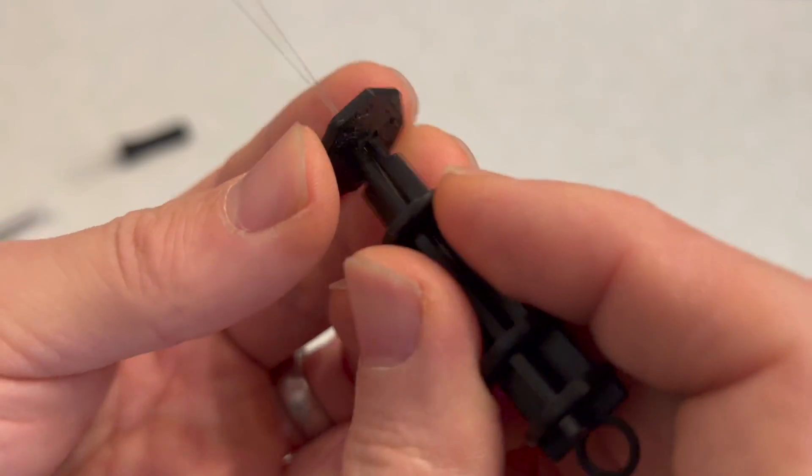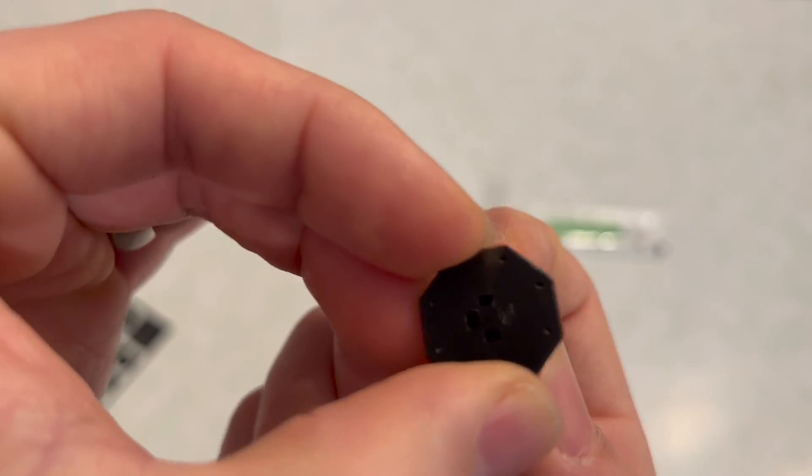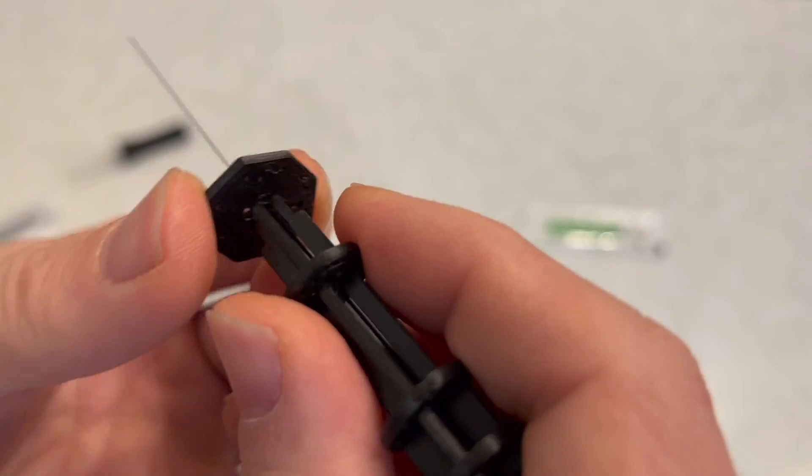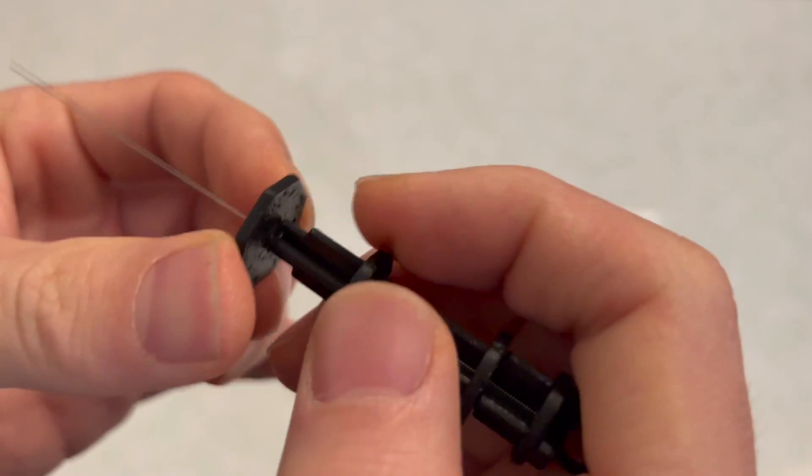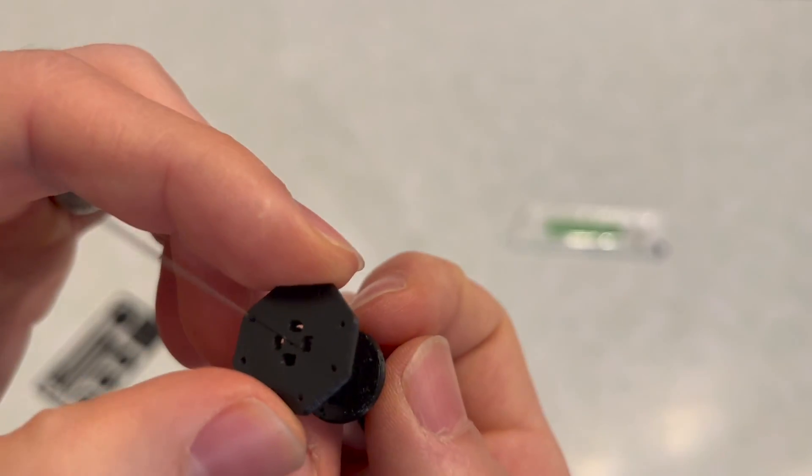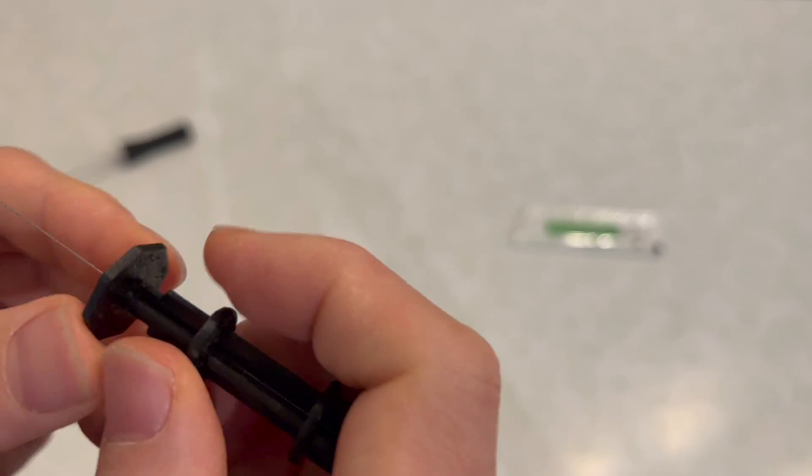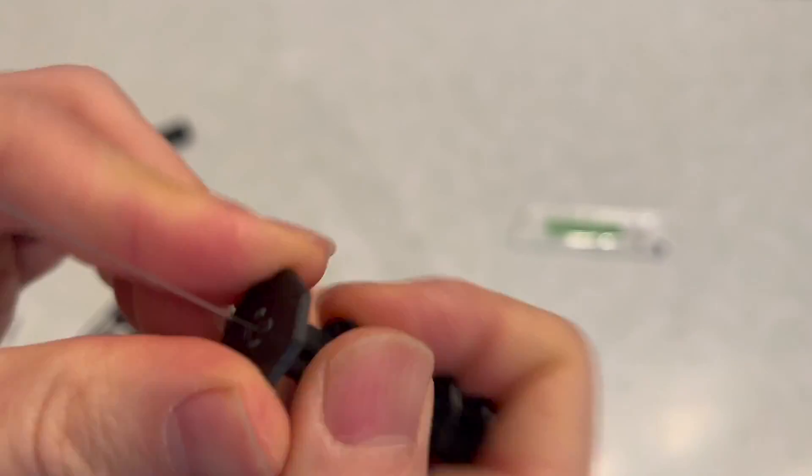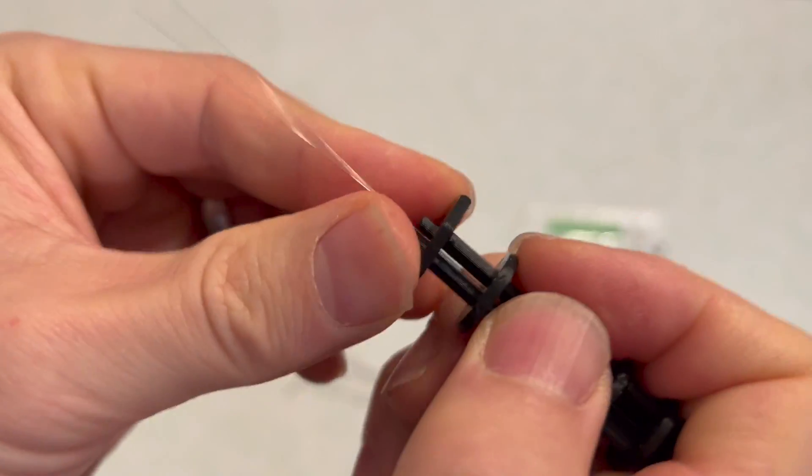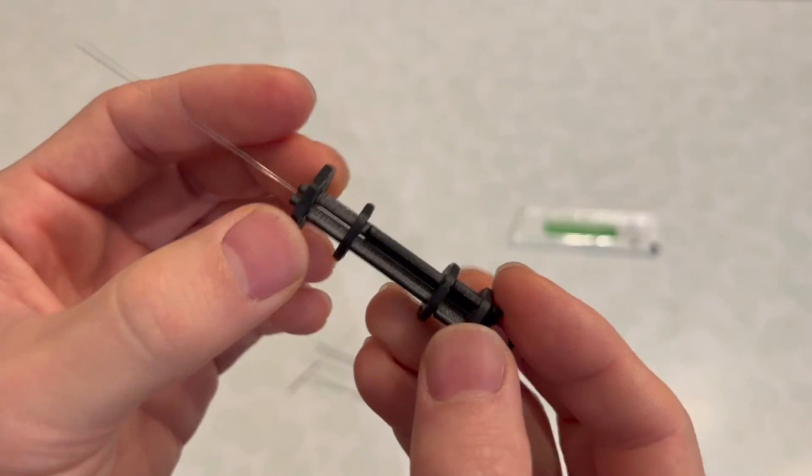Get this through that center hole. This piece, it doesn't matter how you orient it. You just want to get these plastic pieces through these holes. There you go, until it seats like that. Now your middle needle is installed and your handle is installed.